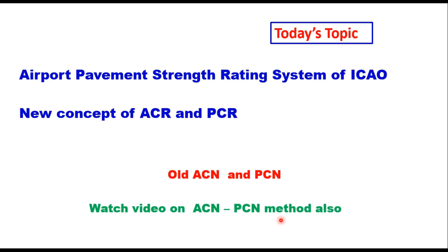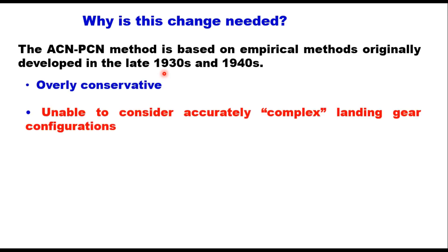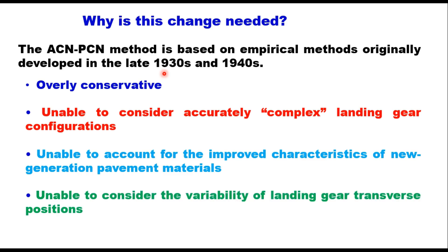You can watch my video on the ACN/PCN method to understand the basic difference between that old method and this new one. The ACN/PCN method was based on empirical methods originally developed in the late 1930s and 1940s, and this method is quite conservative. It is unable to accurately consider the complex landing gear configurations of new aircraft.